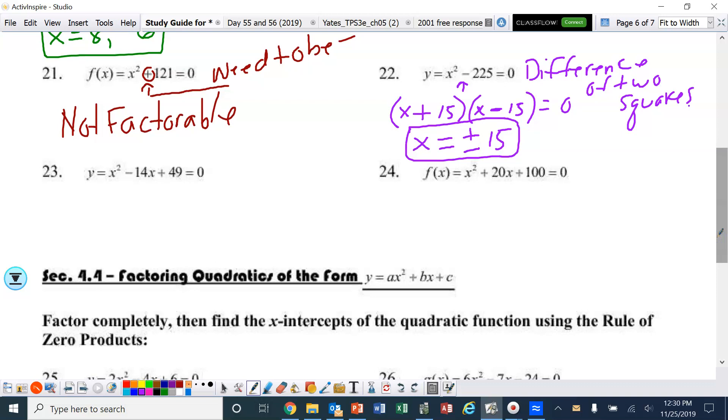All right, last two for this section. This section is pretty short. Factoring this one. Factors of 49 that will give us negative 14. Okay, that's hopefully obvious. Negative 7 and negative 7. So we've got x minus 7 times x minus 7 equals 0. Please remember that could be written as x minus 7 squared. That means there's only one. And that would be x equals 7.